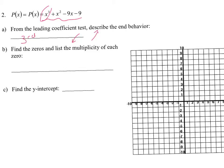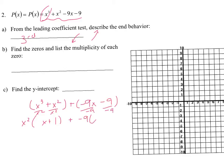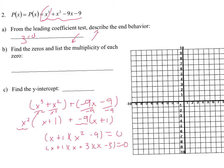Find the zeros — you have to factor this one. Count your terms: there are four terms, so we use grouping. I group X cubed plus X squared, then put the negative inside: negative 9X minus 9. Factor out X squared to get X squared times (X plus 1), then factor out negative 9 to get negative 9 times (X plus 1). The common group is (X plus 1), and the other group is X squared minus 9, which is a difference of two squares. So the fully factored form is (X plus 1)(X plus 3)(X minus 3).